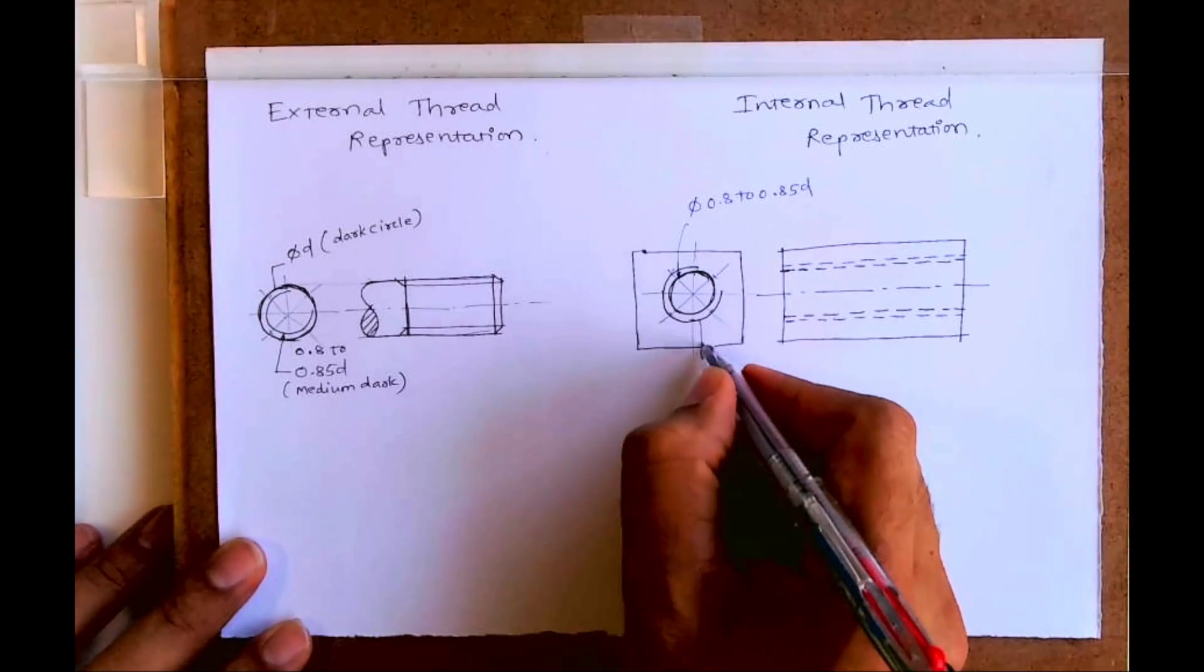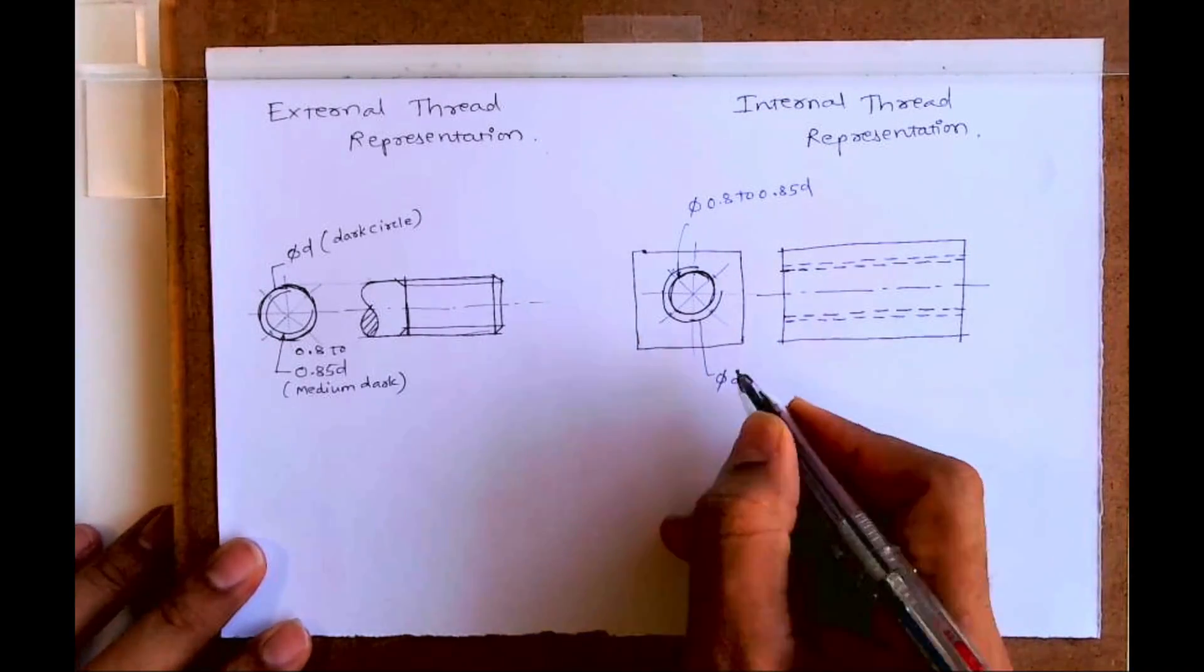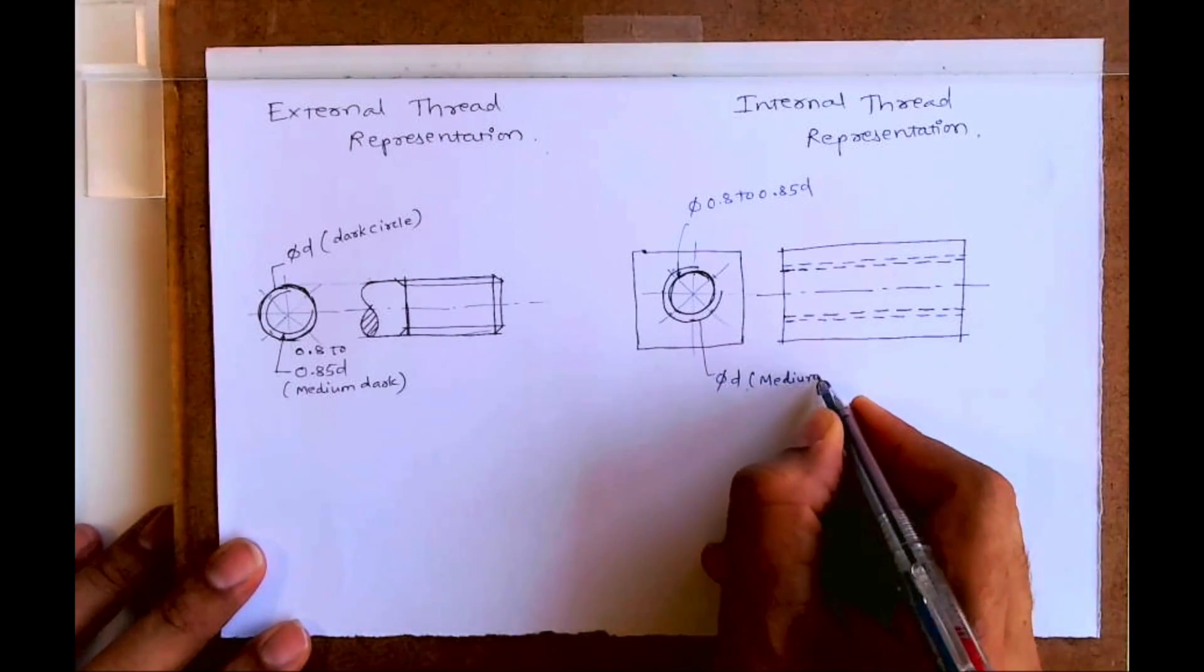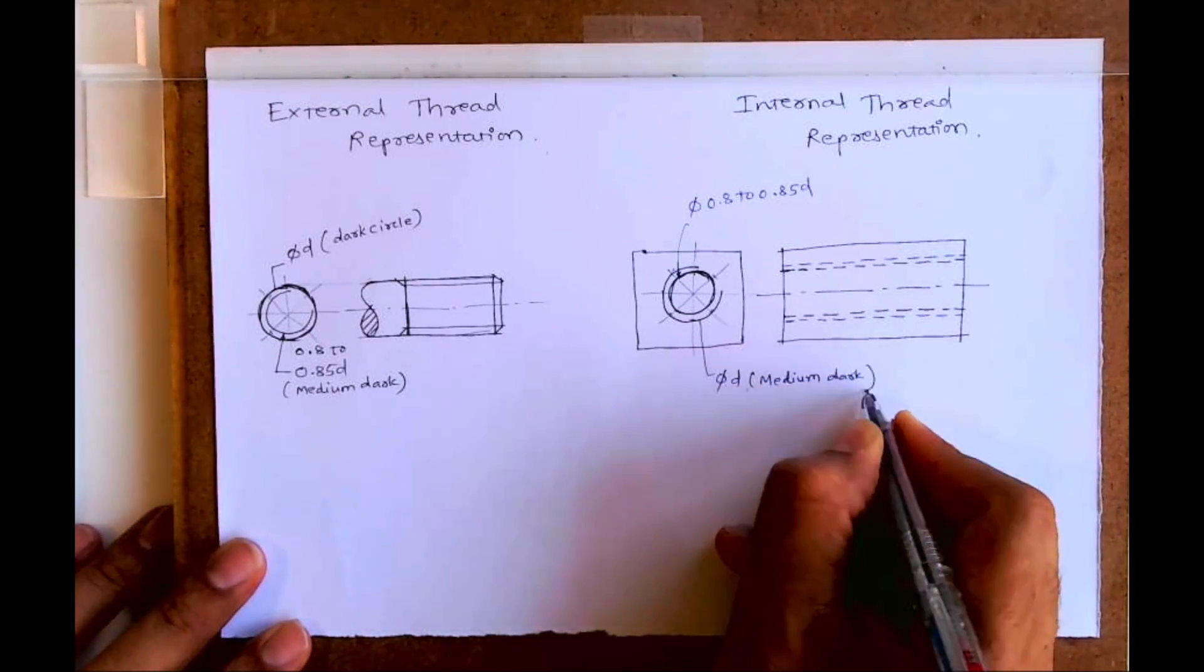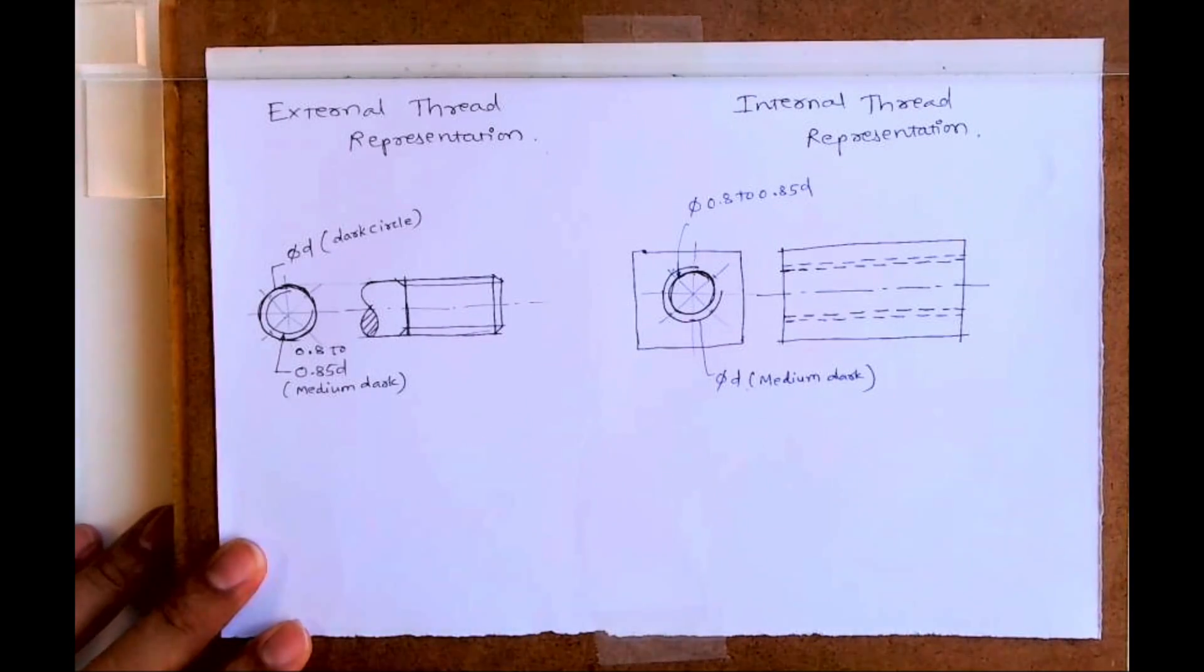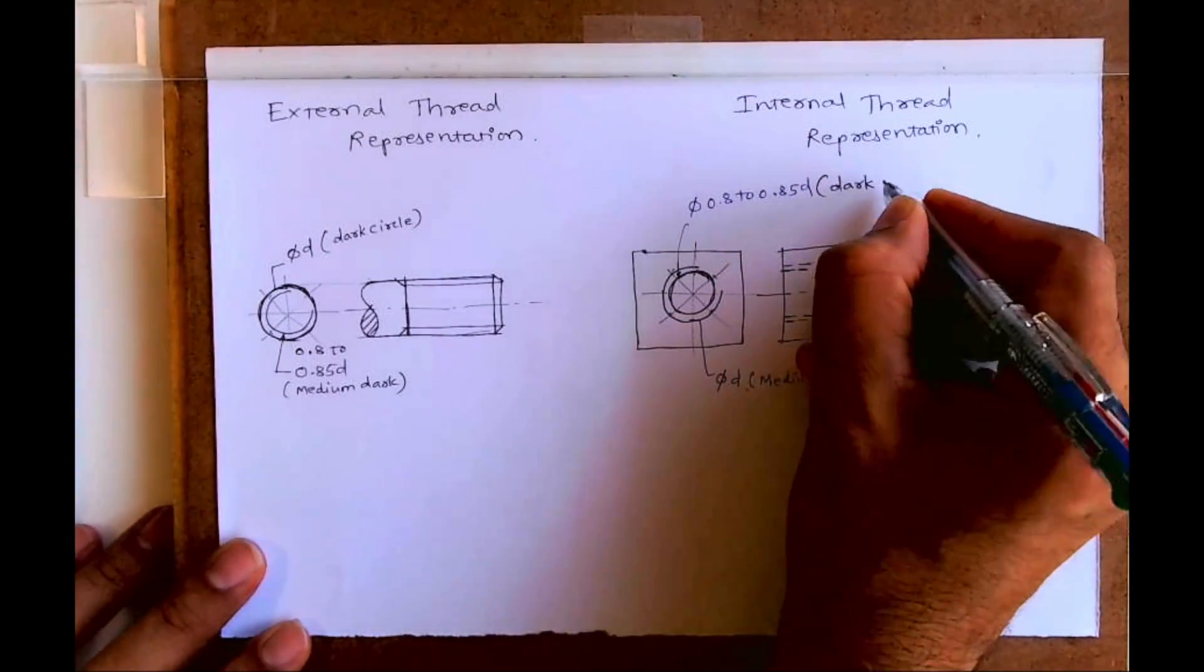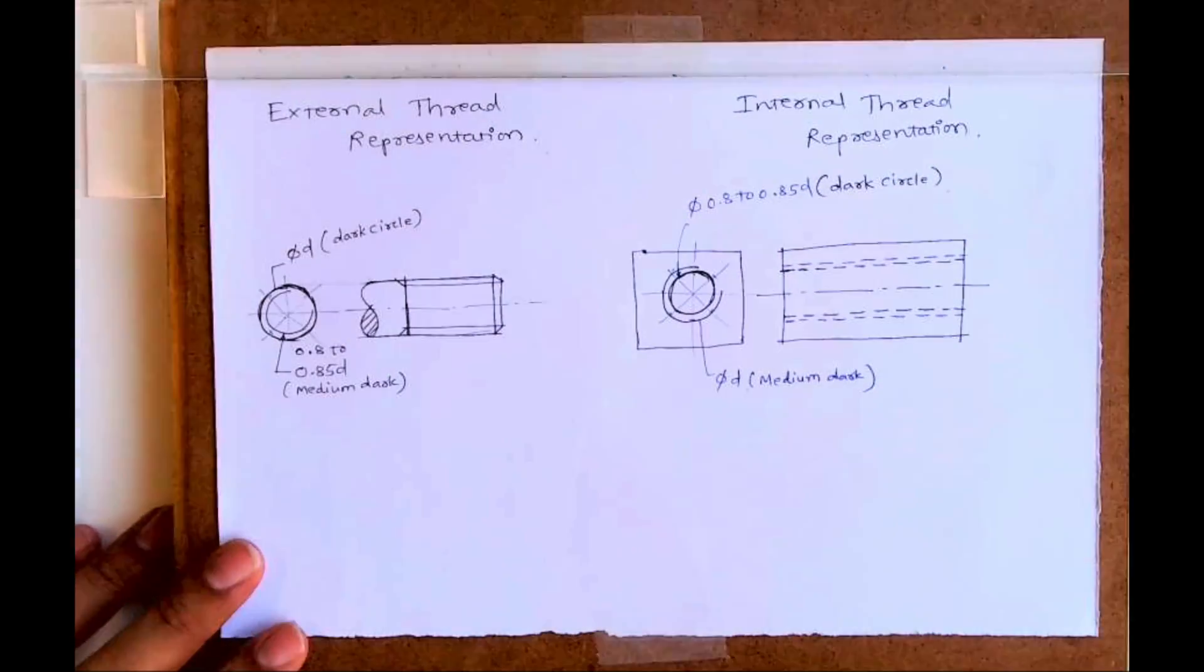This is the inside one, which is 0.8 to 0.85 D, and this is the outer diameter D. In this case, the outer diameter D would be medium dark and the inner one, the full circle, will be dark. I hope you have understood this. Thank you.